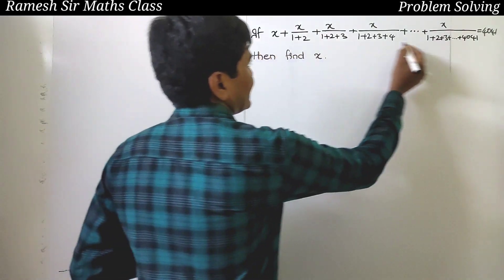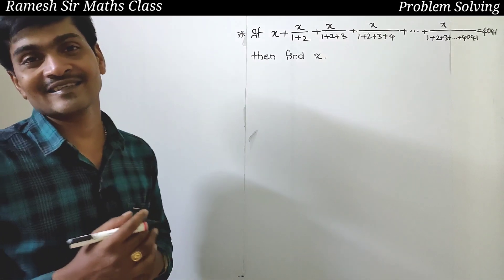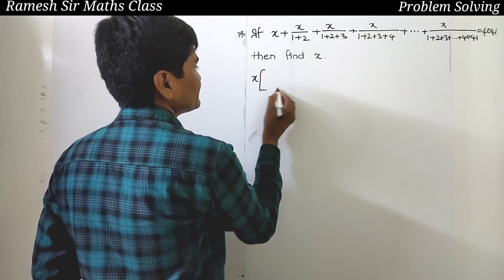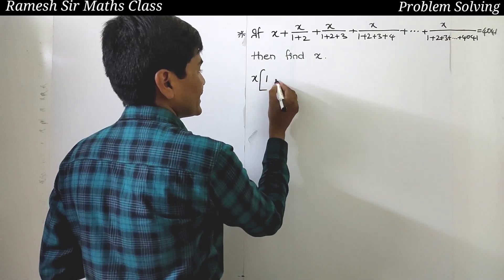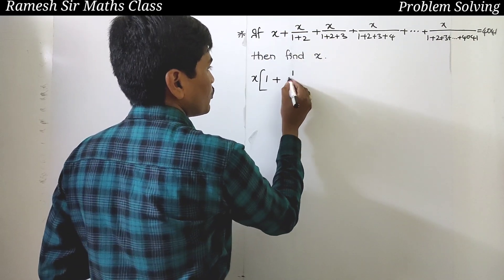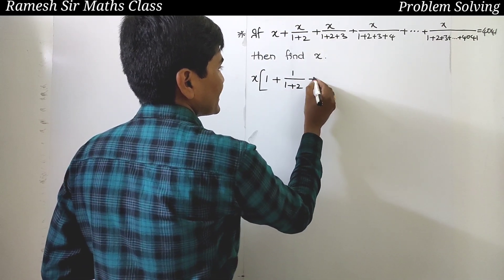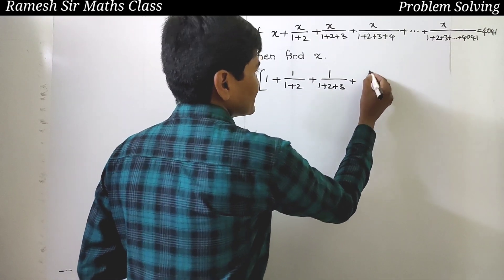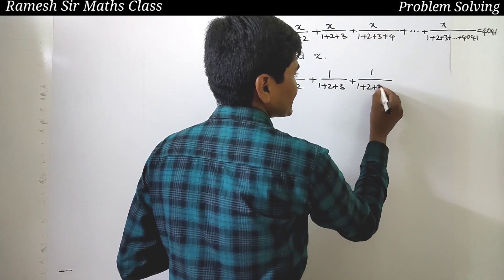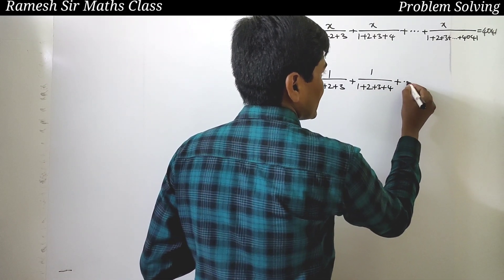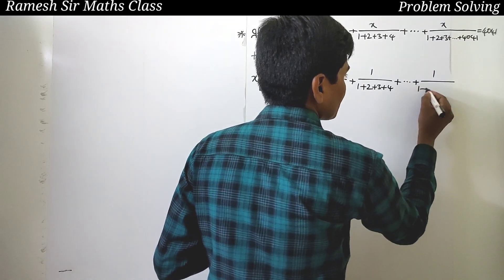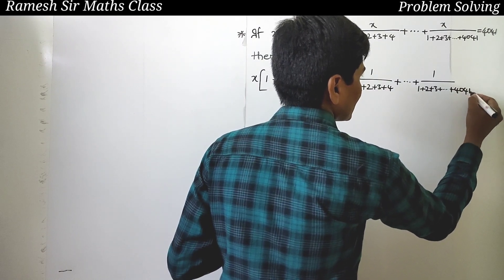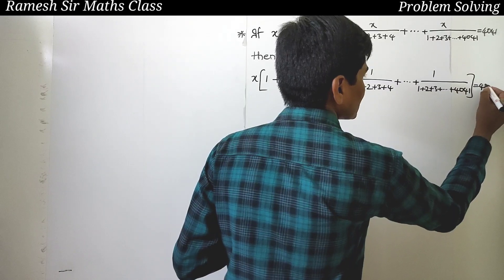We need to find the value of x. In this expression, there are many terms with x. Notice that the denominator of each term is a sum like 1, 1+2, 1+2+3, 1+2+3+4, and so on, up to 1+2+3+...+4041, all equal to 4041.